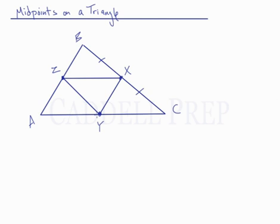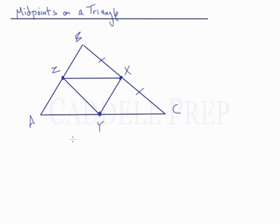Now let's look at point Y. When we add point Y to line segment AC, we end up with two small line segments: AY and YC. Both of these are congruent as well, so we have AY is congruent to YC.